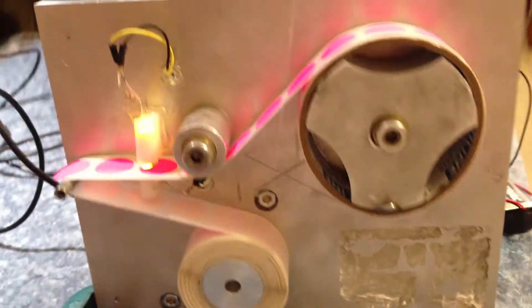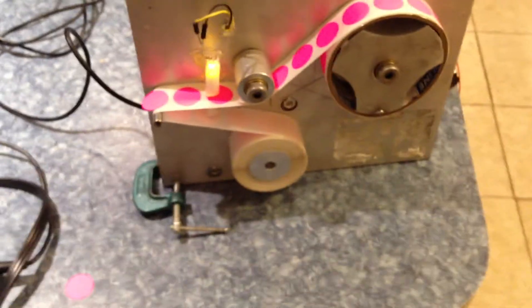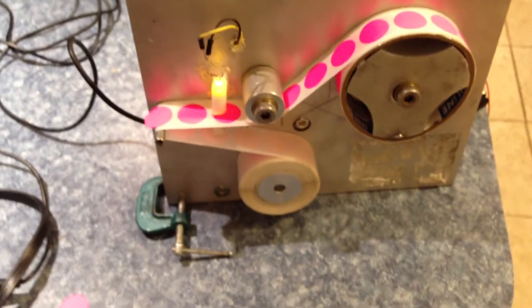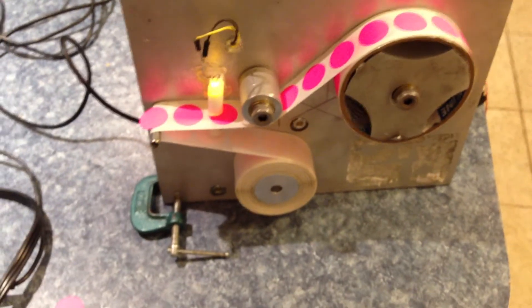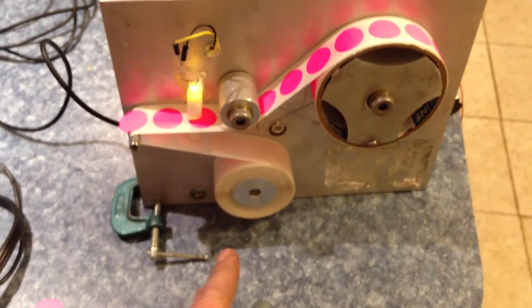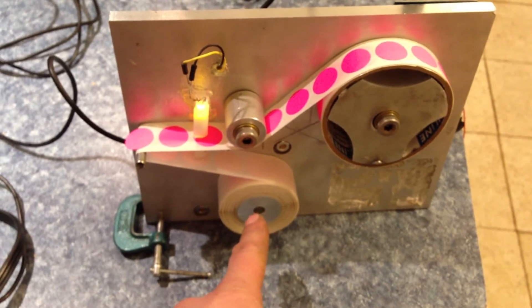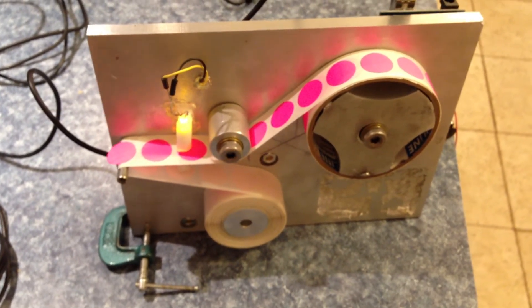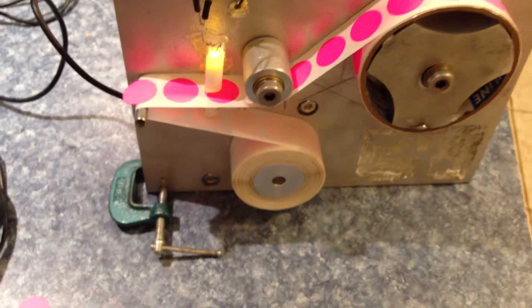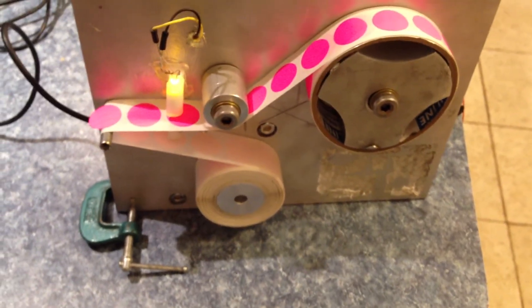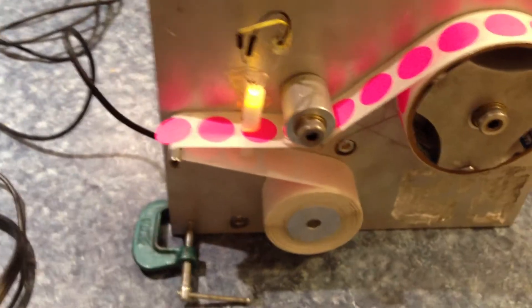Since there are a thousand stickers on the roll, I couldn't just tell it to go a certain distance. Two reasons. One, any error is going to be amplified by the time you get to the end of the roll. Second, since I'm driving off this wheel, the diameter is going to change as it picks up more of the backing. So again, that would change how much it travels. This seems to work.